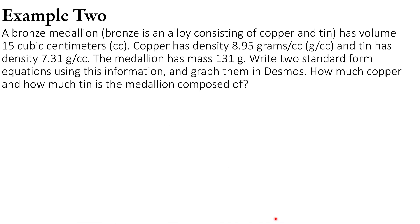My second example: a bronze medallion — bronze is an alloy consisting of copper and tin — has a volume of 15 cubic centimeters (cc). Copper has a density of 8.95 g/cc, tin has a density of 7.31 g/cc, and the total mass of the medallion is 131 grams. We're going to write two standard form equations using this information, then graph them in Desmos to figure out how much copper and how much tin is in the medallion.